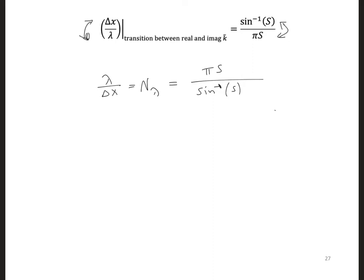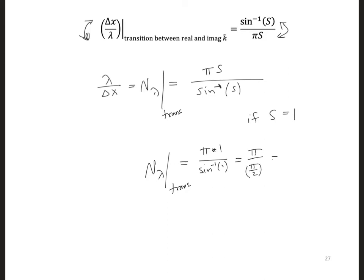Let's say we set s equal to 1 — a nice even number right at the Courant stability limit. Then N_λ at the transition point equals π times 1 divided by arcsine(1), which is π over (π/2), which equals 2. So this means to ensure the numerical wave number is a real number, we need at least two grid cells per wavelength.